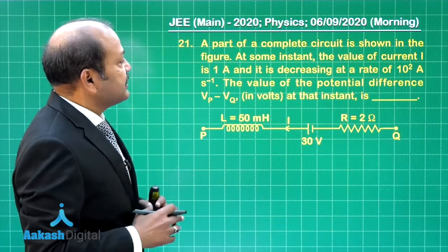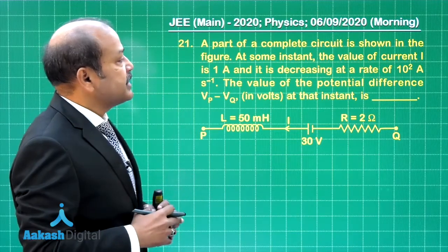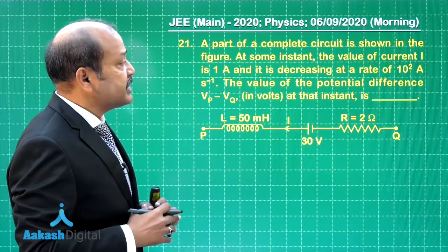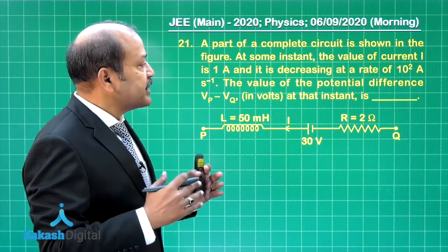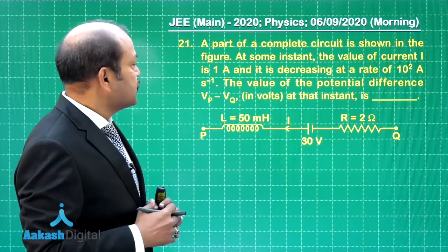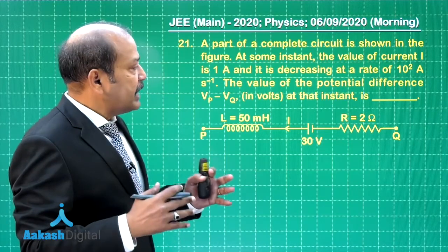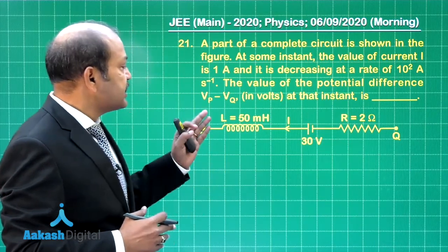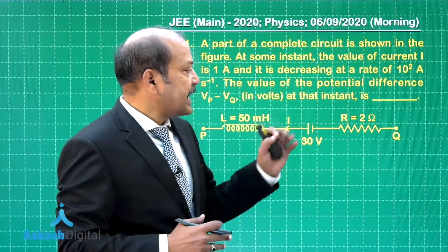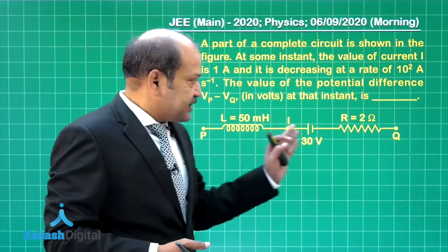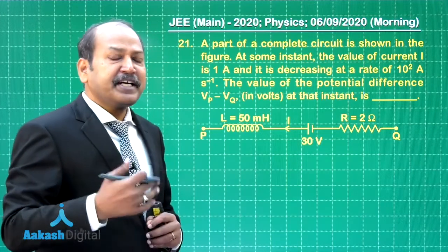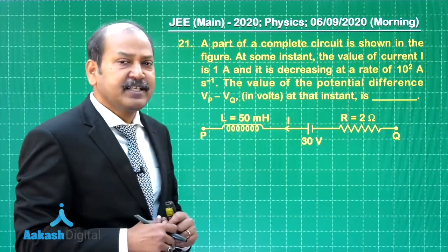Question 21 says a part of a complete circuit is shown in the figure at some instant the value of current i is 1 ampere and it is decreasing at a rate of 10 to the power 2 ampere per second. The value of the potential difference V p minus V q in volts at that instant is, well it is about electromagnetic induction and there is inductor in the circuit.